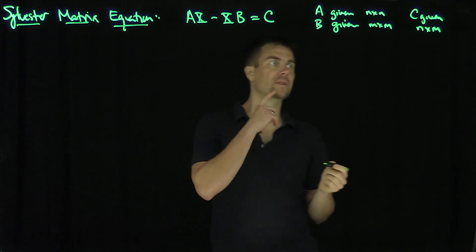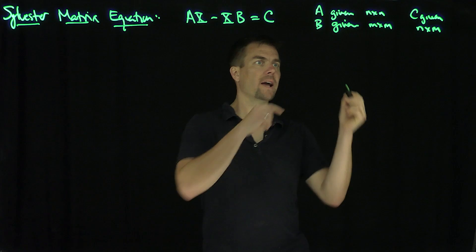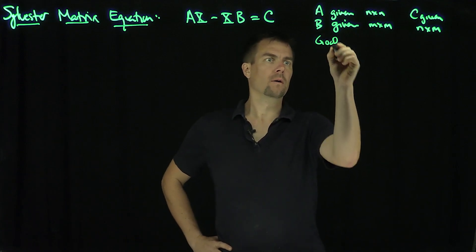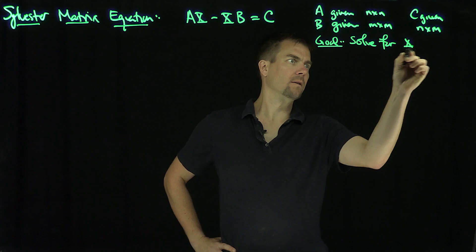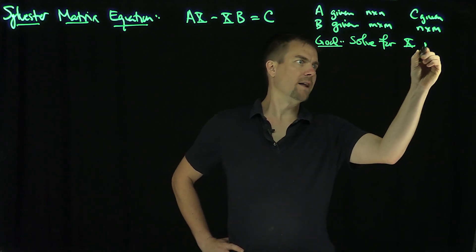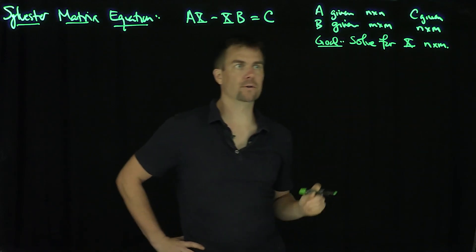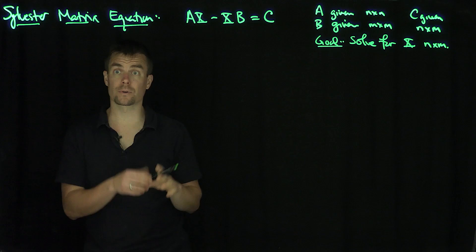If this is the case, what does X have to be? X will be an n by m matrix. Our goal is to solve for X. When is that possible for a given matrix C?